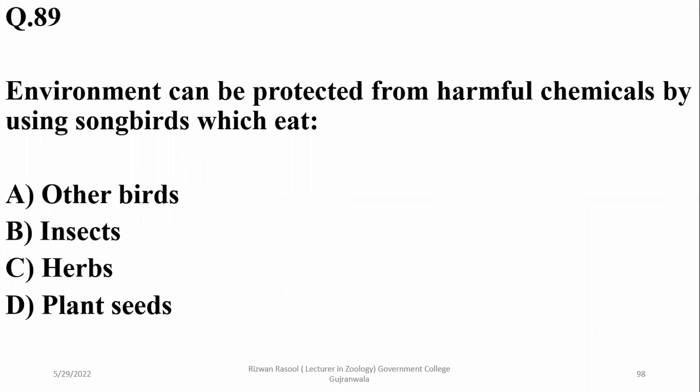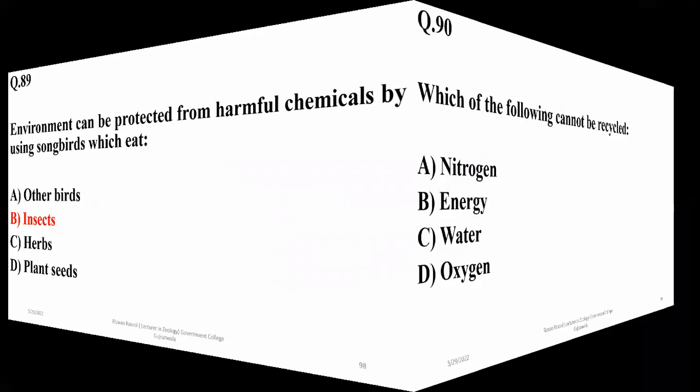Question 89: Environment can be protected from harmful chemicals by using songbirds, which eat insects and help in avoiding chemical control or reducing the use of chemicals. Right option is beta.